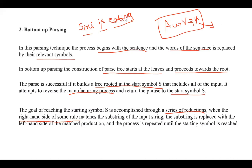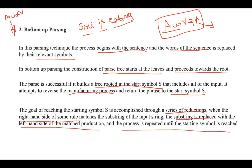If the RHS is matched with the substring of the input string, the substring is replaced with the LHS of the matched production. You need to construct the tree starting from the leaf nodes, replacing 'is' with Auxiliary Verb as the LHS of the matched production. You repeat this process, constructing the tree from bottom to top, until the start symbol — represented as S — is reached.